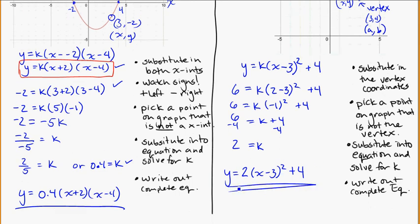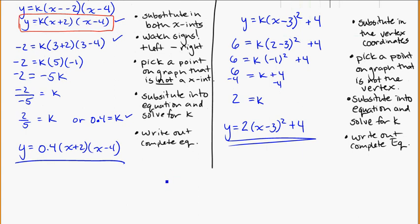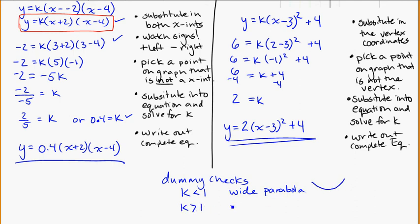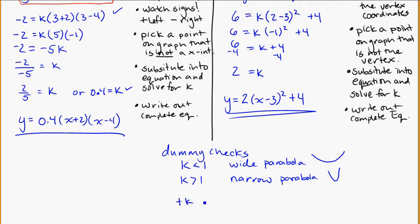To summarize both methods: the first step is always to pick which equation to use — intercept method or vertex method. As a quick check: k less than 1 gives a wide parabola, k greater than 1 gives a narrow parabola, positive k means upright, and negative k means upside down. Give it a go and see how it works.